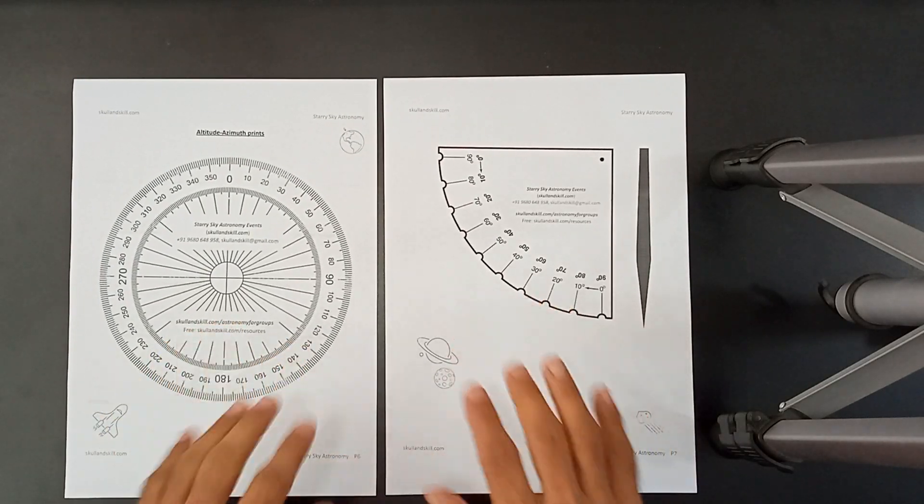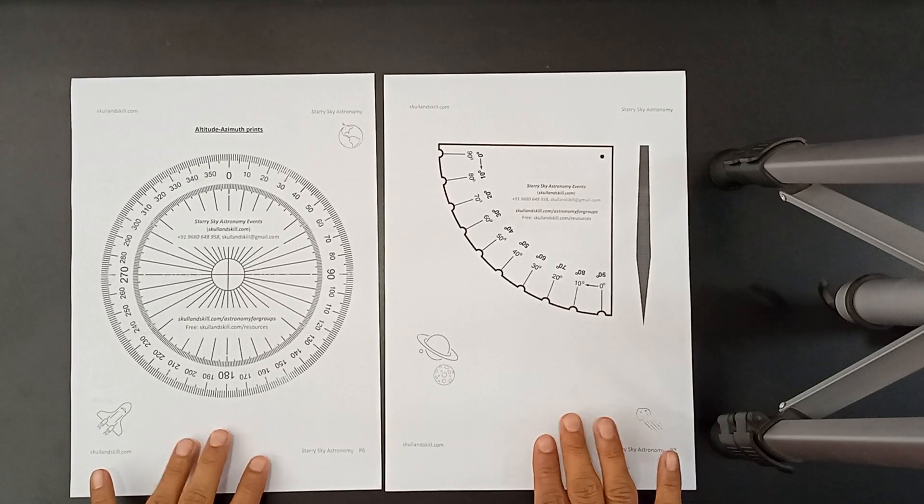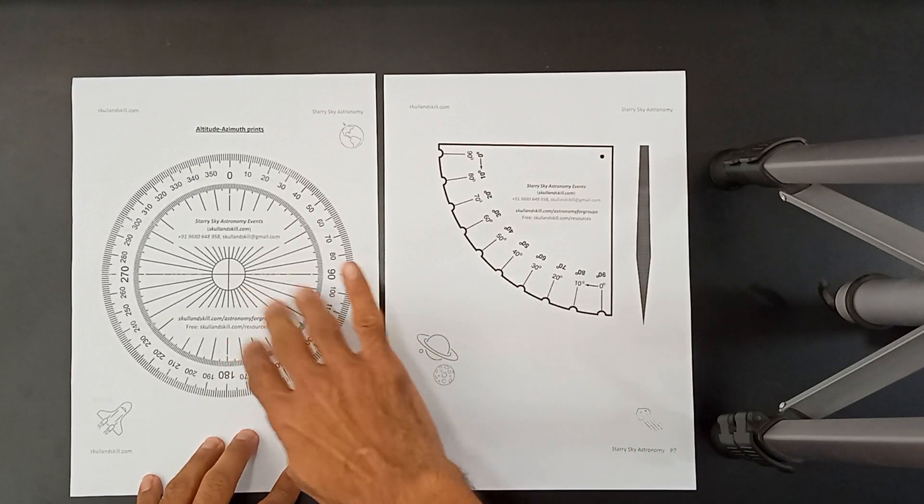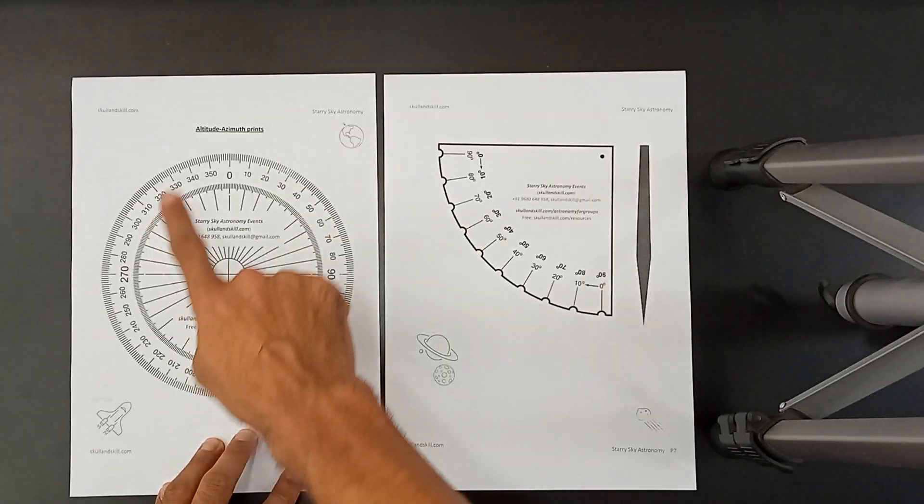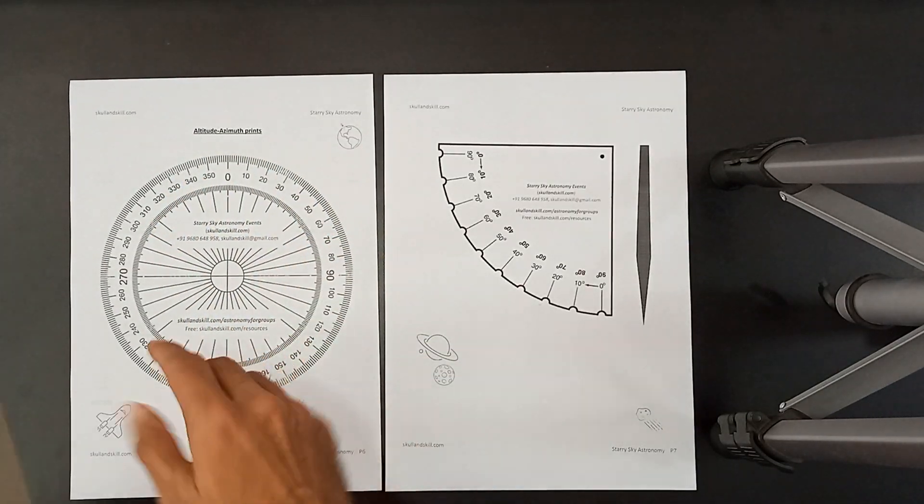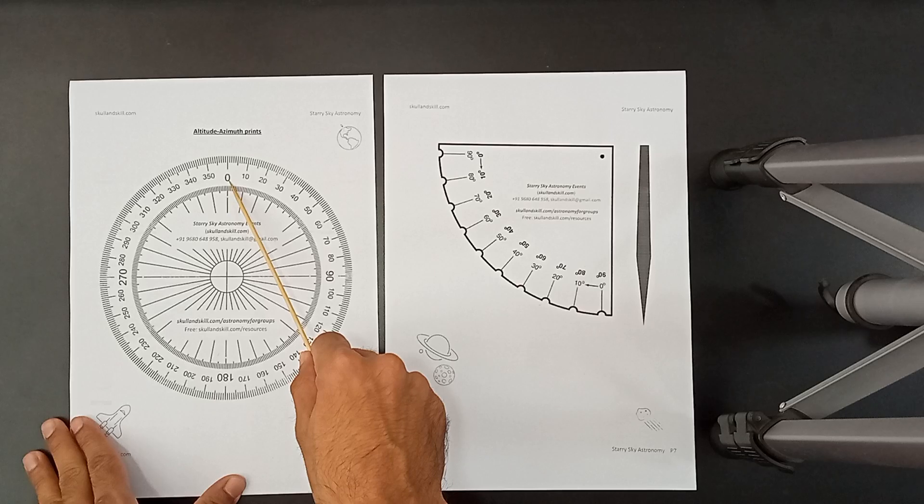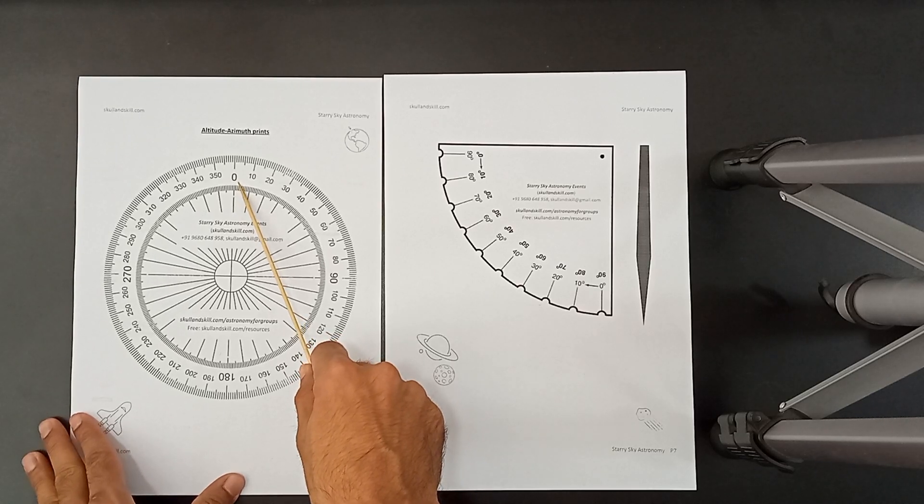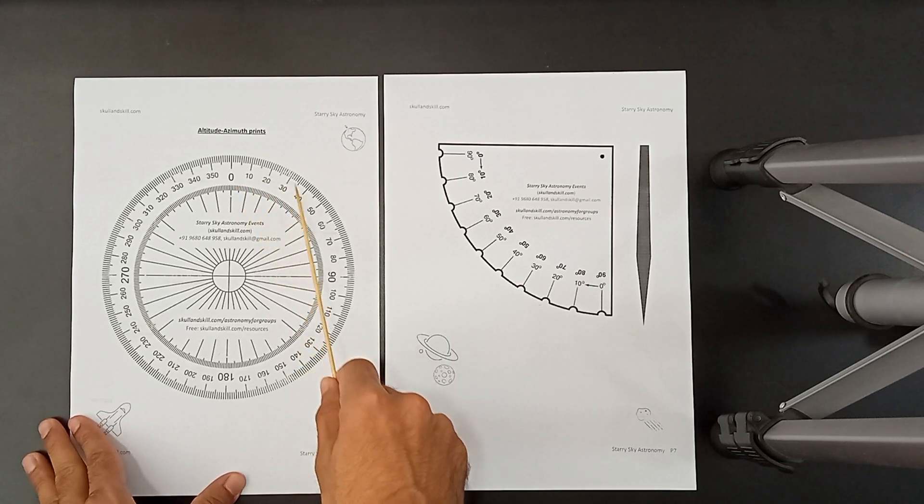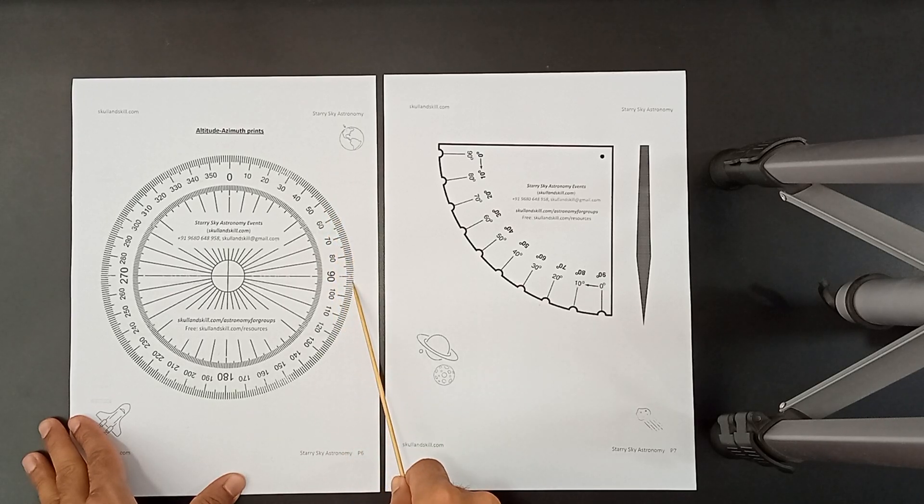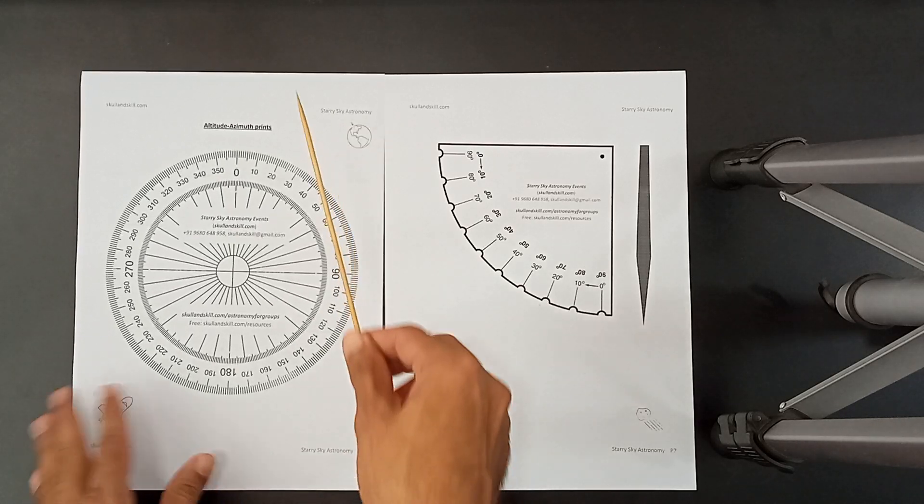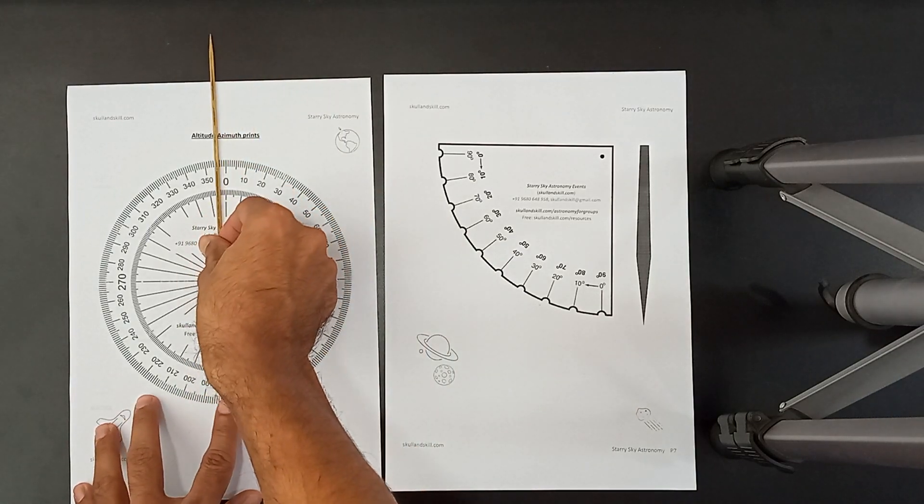We have these prints for you over here. This is for measuring the angle of azimuth. This is a circular plate with angles marked on it. Notice that 0 degrees right over here. Then 10, 20, 30, 40, 50, 60. A quarter is completed over here. You can very well see that. This is going to be a north direction.